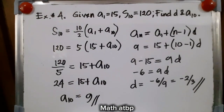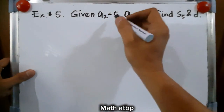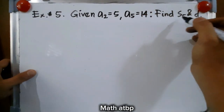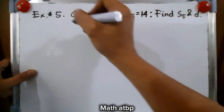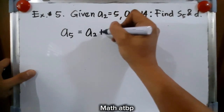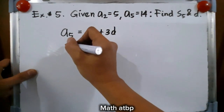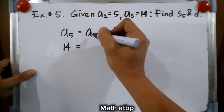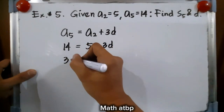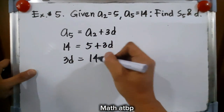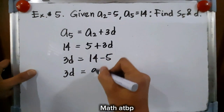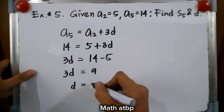I hope you can follow. Example number 5: given a sub 2 is equal to 5, the second term is 5, and a sub 5 is 14, the fifth term. Let us find s sub 5, or the sum of 5 terms, and the difference. So a sub 5 is equal to a sub 2 plus 3d. Our a sub 5 is 14, and our a sub 2 is 5 plus 3d. We have 3d equal to 14 minus 5, that is 9, therefore d is equal to 3.